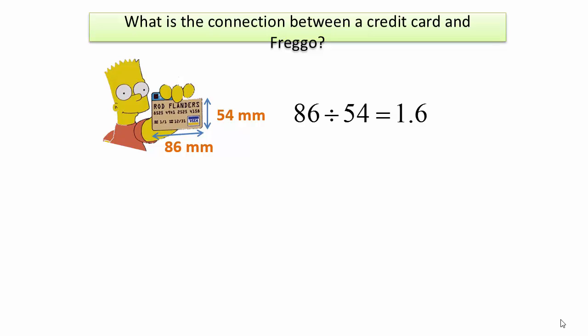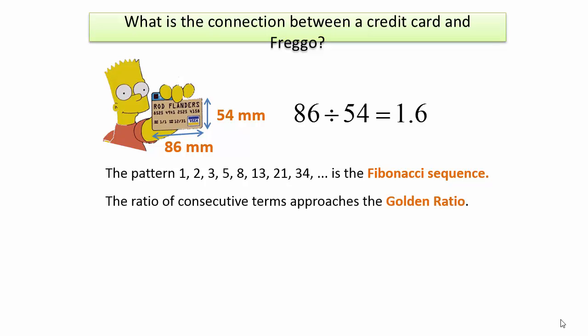That 1.6 is the ratio that we've obtained from our sequence, and that sequence is a very famous one. It is called the Fibonacci sequence, and when we take the ratio of consecutive terms for the sequence approaching infinity, the answer is the golden ratio. In fact, the exact value of the golden ratio is 1 plus the square root of 5 over 2, which we took to be approximately 1.6.